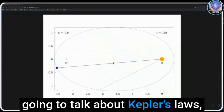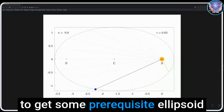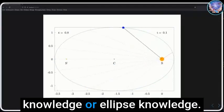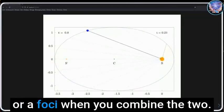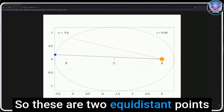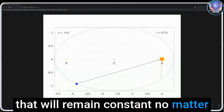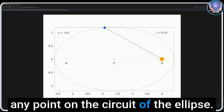You're just making measurements that give you a period. As we move forward, we're going to talk about Kepler's laws, but before we do that, we're going to get some prerequisite ellipse knowledge. An ellipse is defined by a focus point, or when you combine the two, these are two equidistant points that will remain constant no matter any point on the circuit of the ellipse.